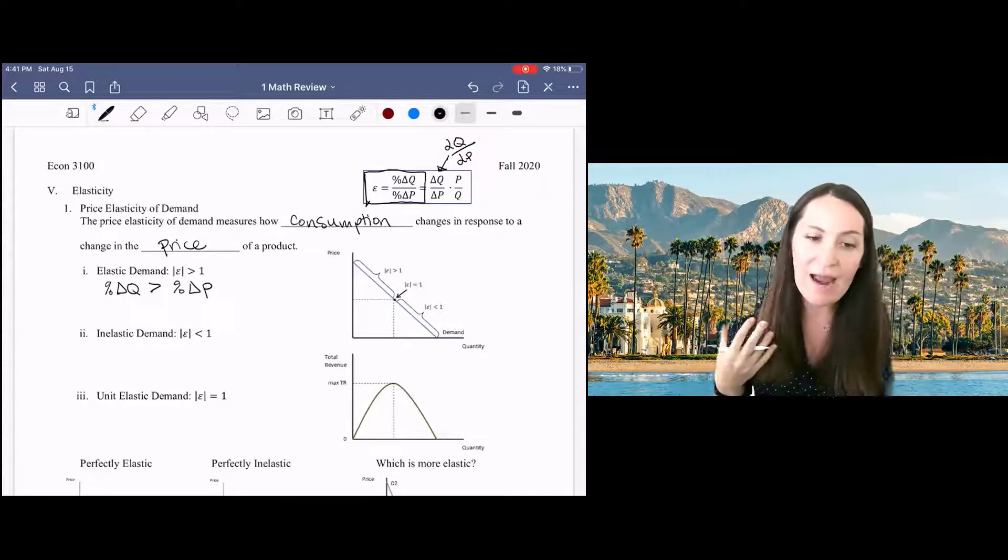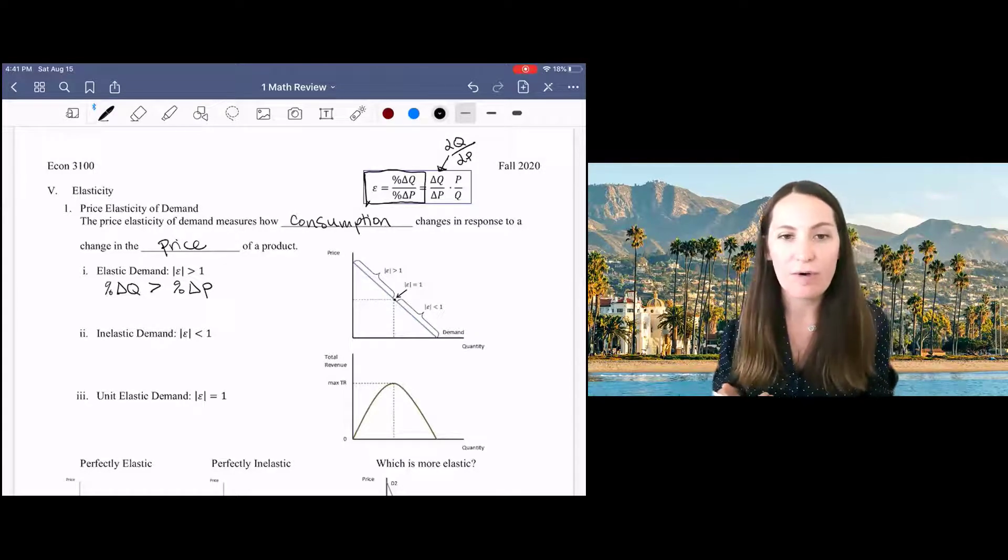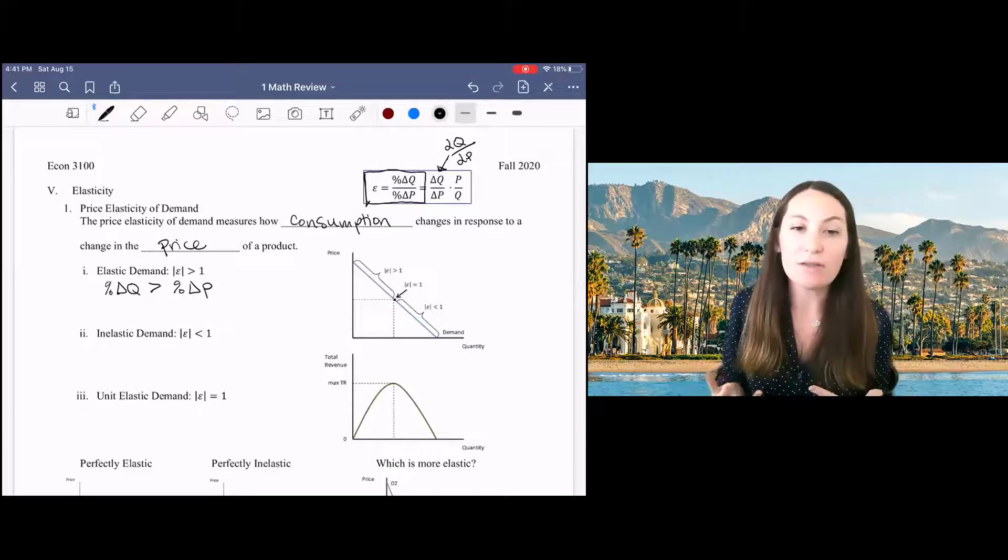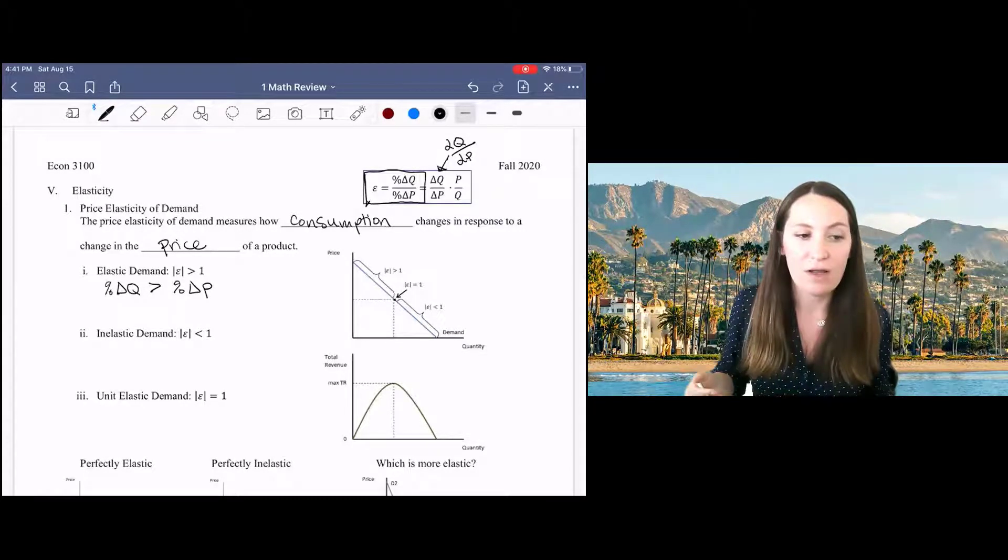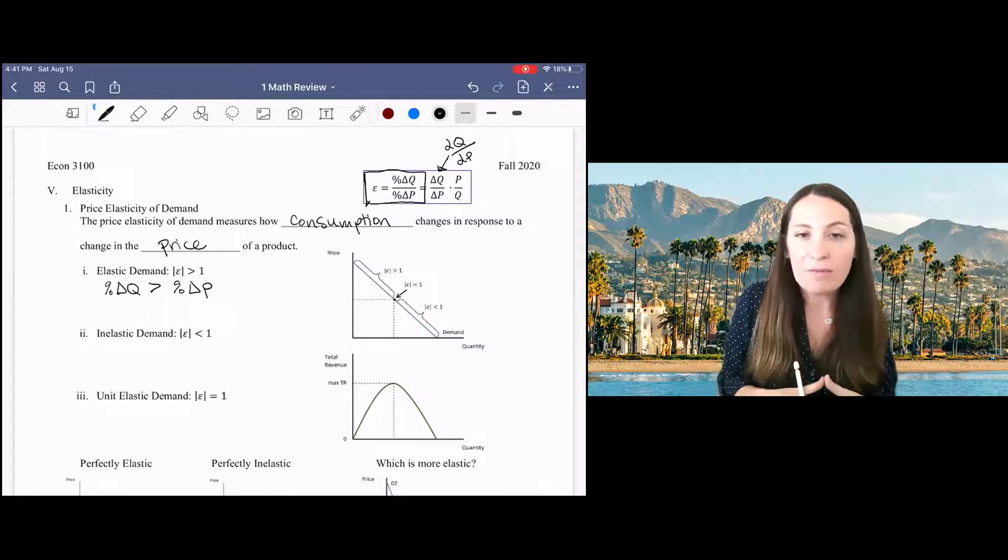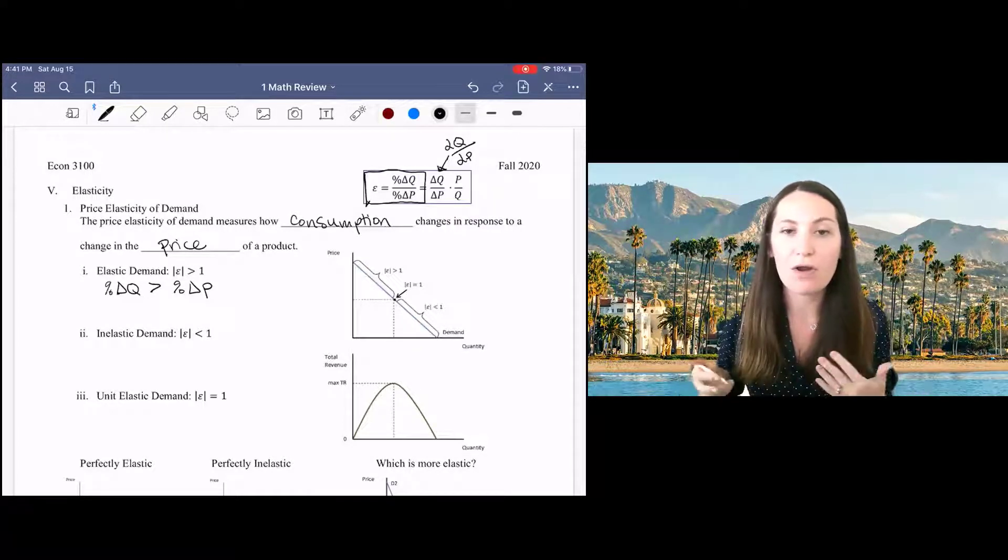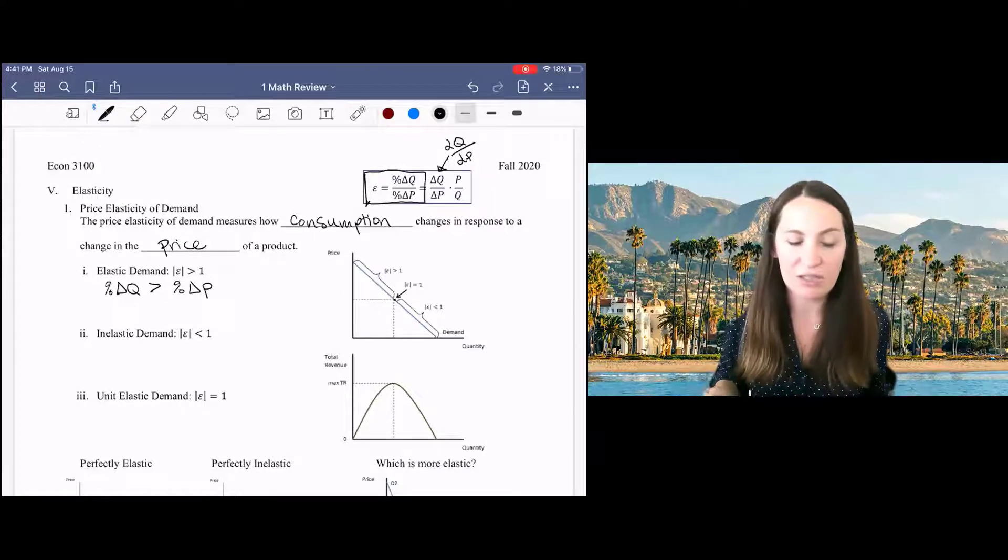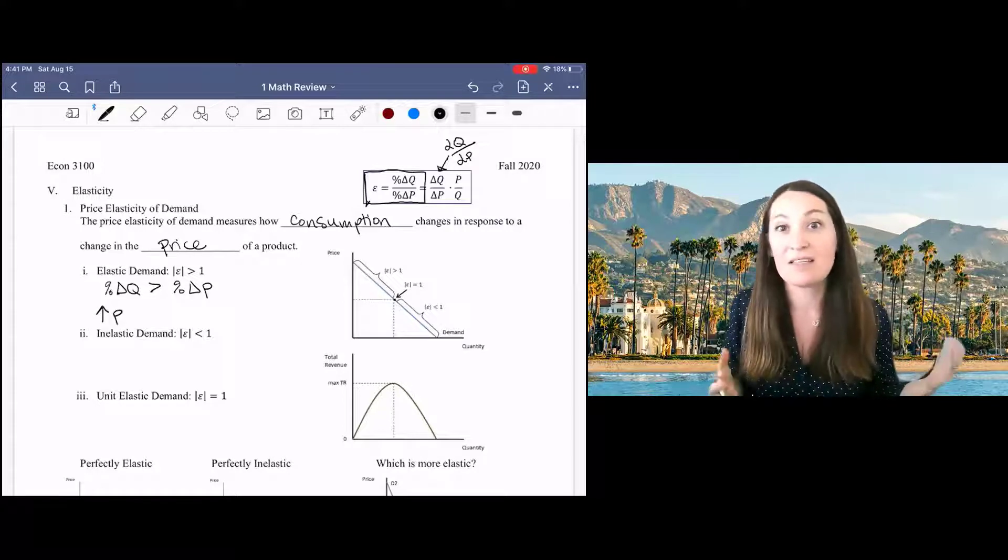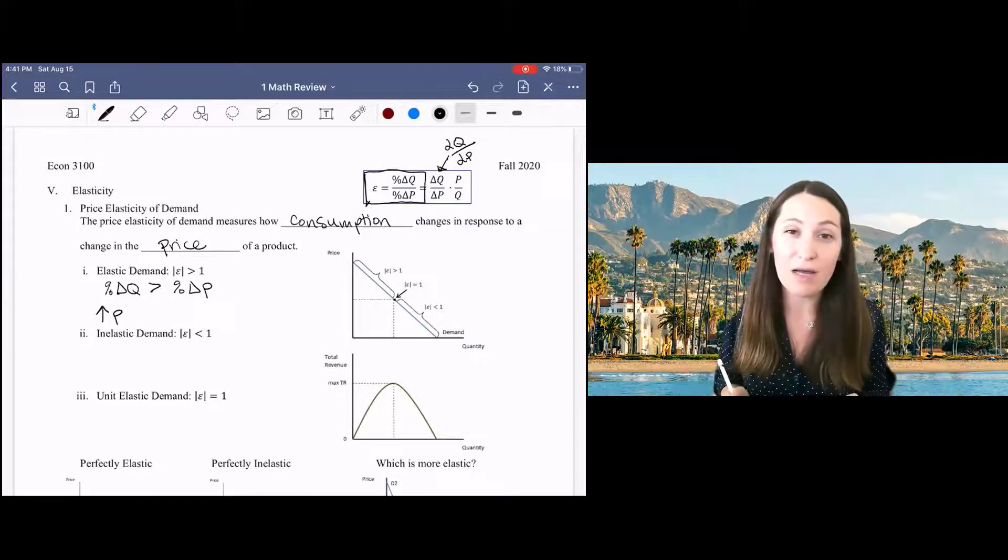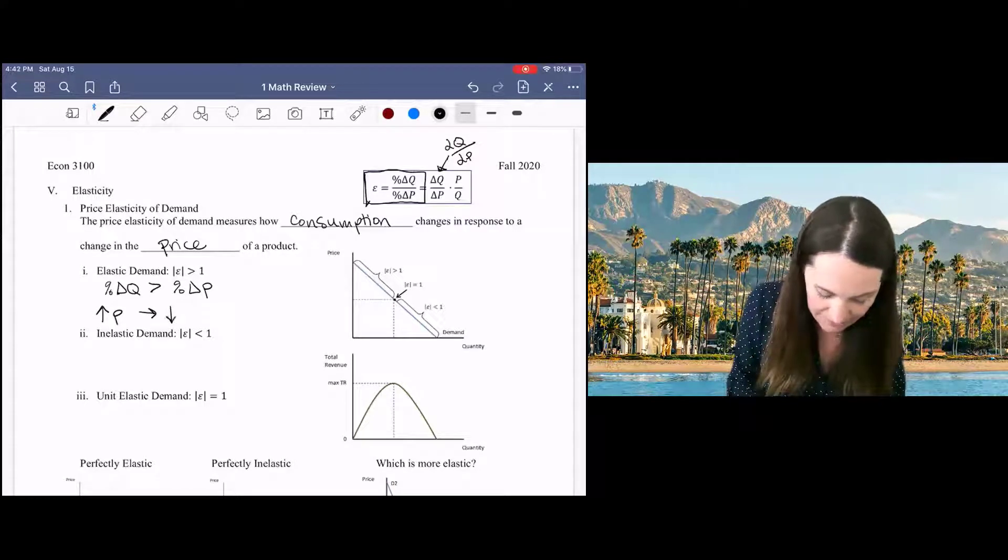And when that happens, it tells me something about total revenue, not just about consumers, but it also tells me something about total revenue along the demand curve. And that is that when we have elastic demand, price and total revenue are going to move in opposite directions. So if you increase your price, it's going to make people buy a lot less of your product and you're going to earn overall less money.